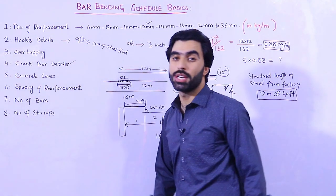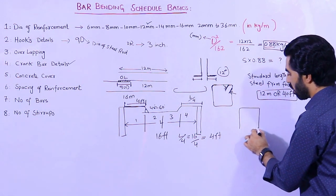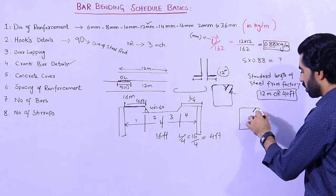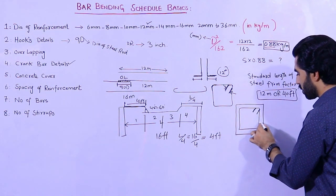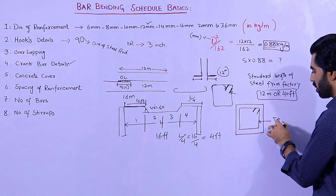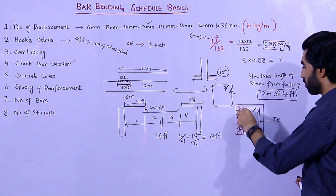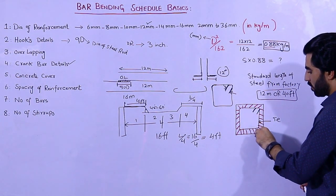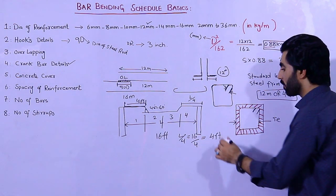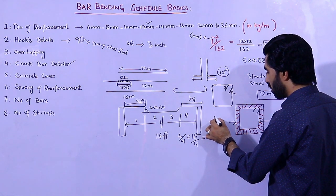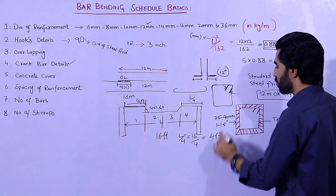Next, let's talk about concrete cover. As you can see, suppose this is a column — here we have stirrups or ties, and on all four sides we are providing the concrete cover. Concrete cover is important for beam, column, and slab. The concrete cover should not be less than 25 to 40mm, or from 1 to 1.5 inches.